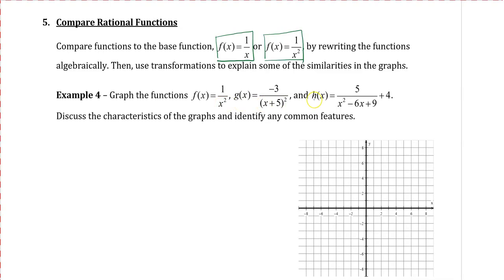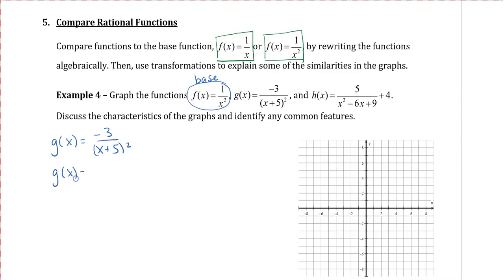Let's take a look at these three functions. We haven't seen one with a squared yet, so let's see what this looks like. We have f(x) = 1/x², which we'll call our base function. For g(x), it looks like we have negative 3 times our base function: negative 3 over (x+5)². We can think of this as g(x) = negative 3 multiplied by 1/(x+5)². Taking the x+5 and plugging it into x gives us (x+5)² in the denominator.